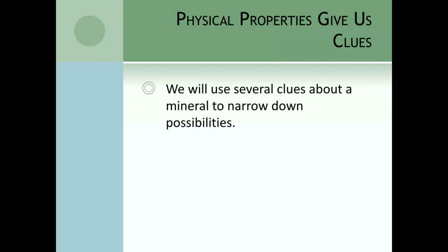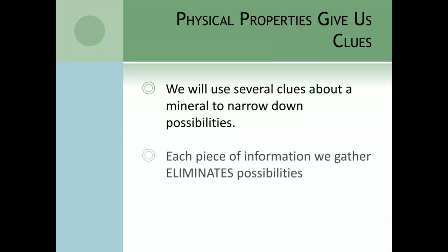When a geologist is presented with something, they start with over 2,000 possibilities. One piece of information narrows it down to just a couple hundred. Two pieces narrows it to less than 100. Three pieces gets it down to about 50. Four pieces gets it to the teens. After five or six pieces of information, we may have enough to identify the mineral. Each piece of information eliminates a possibility — it's more about figuring out what something is not.